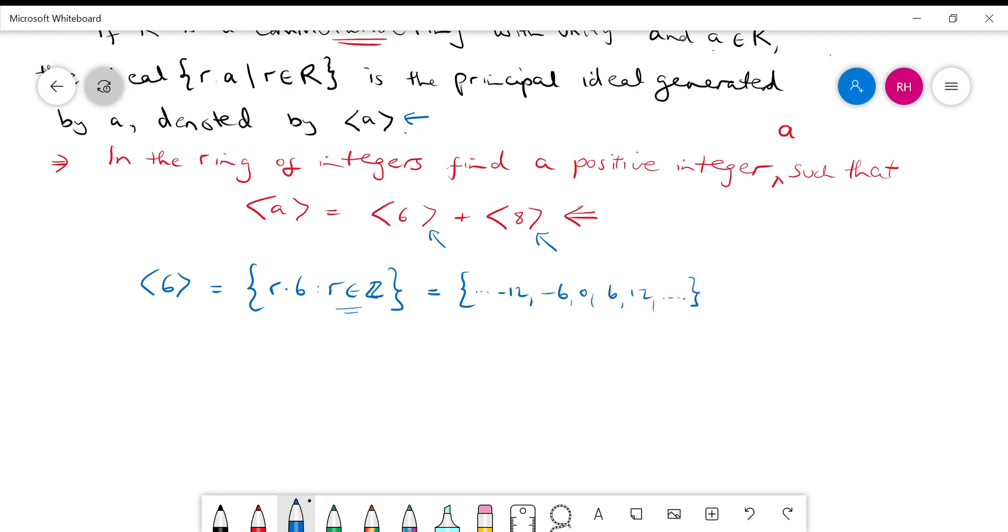So the ideal generated by the number 8 is equal to dot dot dot negative 16, negative 8, 0, 8, 16, dot dot dot. Okay, so that's good. Now the next thing you'll have to understand is what does this plus mean here? Well,